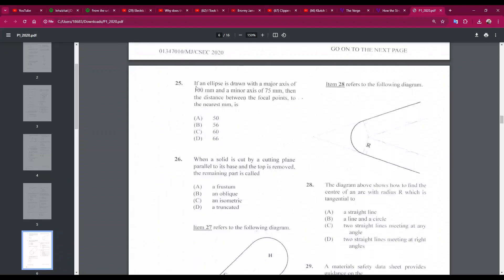Number 25: if an ellipse is drawn with a major axis of 100 millimeters and a minor axis of 75, then the distance between the focal points to the nearest millimeter is... Now, this is a very tricky question. There's actually a formula for this, and it says that A, A being the distance between the focal points, is the square root of B squared minus C squared. B squared would be the length of the major axis, and C squared would be the length of the minor axis. So you square them, then you subtract it, then you find the square root of the answer, and you will get D, 66. That's how you work this question out. So number 25D.